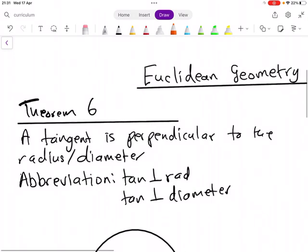Now, I want you to listen to what it says. It says a tangent, and remember, a tangent is that line that touches the circle at only one point. A tangent is perpendicular to the radius or the diameter.